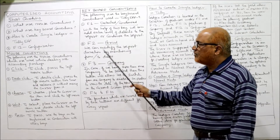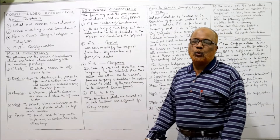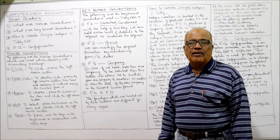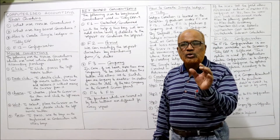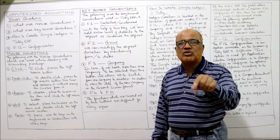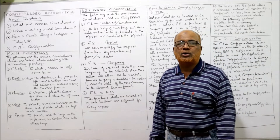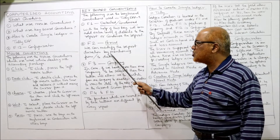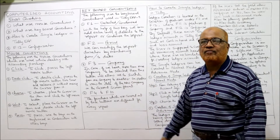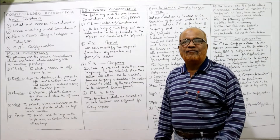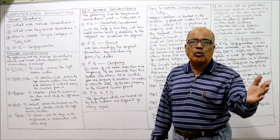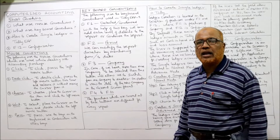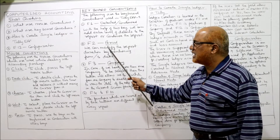The second key is F2. The F2 key is used for period — it means we can select the period for which we want the report. We can modify the report duration by mentioning two dates, a 'from' and 'to' date, to get the report for a specific time range. That is the function of F2.